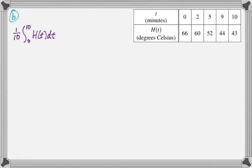And you have to be able to write down what average value means. So H(t) is telling you the temperature. So it's the average temperature in degrees Celsius because average value will always have the same units as the original function of H(t).